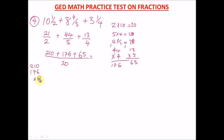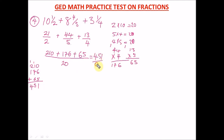Adding 210 + 176 + 65: 0 + 6 + 5 = 11, write 1 carry 1. 1 + 7 + 6 + 1 = 15, write 5 carry 1. 1 + 2 + 1 = 4. Total is 451 over 20. This is an improper fraction — we need to convert to a mixed fraction.